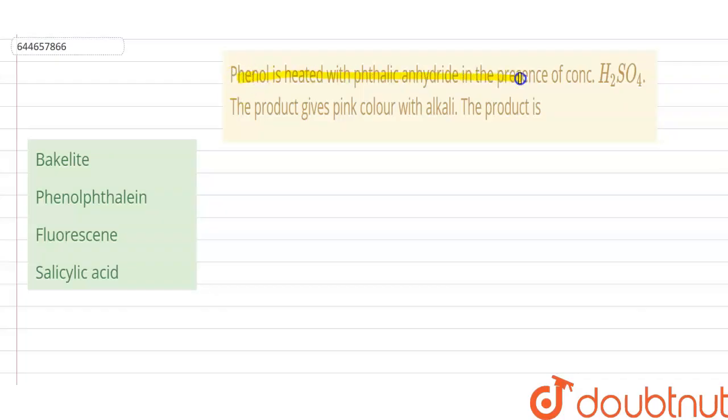Phenol is heated with phthalic anhydride in the presence of concentrated sulfuric acid. The product gives pink color with alkali. So we have to find the product. First of all, we have to know what is the structure of phthalic anhydride.